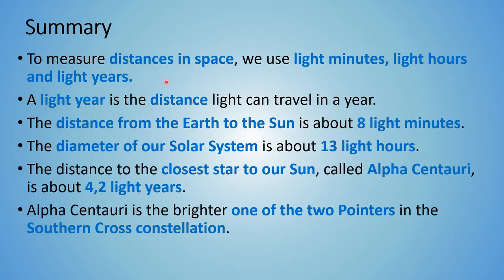Let's summarize what we have learned today. We measure distances in space using light minutes, light hours, and light years. A light year is a distance — it is the distance that light can travel in a year. Three key distances to know: the distance from the Earth to our sun is about 8 light minutes; the diameter of our solar system is about 13 light hours; and the distance to the closest star to our sun, Alpha Centauri, is about 4.2 light years. Alpha Centauri is the brighter of the two pointers, which is part of the Southern Cross constellation.